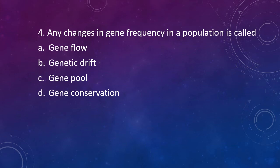Question 4: Any changes in gene frequency in a population is called as? Option A: Gene flow. Option B: Genetic drift. Option C: Gene pool. Option D: Gene conservation. The correct answer is Option B — Genetic drift.